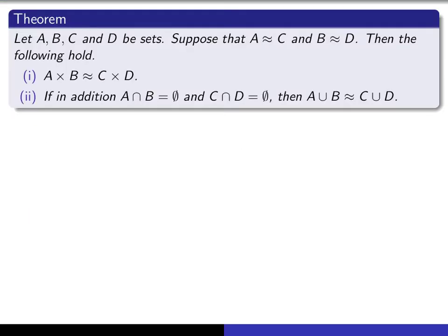So we're going to state it as a theorem. We give ourselves four sets. We suppose that A has the same cardinality as C, and B has the same cardinality as D. Then in general, A cross B and C cross D will have the same cardinality. And if A and B are disjoint and C and D are disjoint, then the unions will have the same cardinalities.